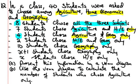X plus 1 students chose Agriculture only. 10 students chose Geography only. This should be Agriculture only, not Geography only.